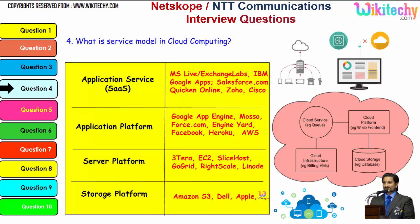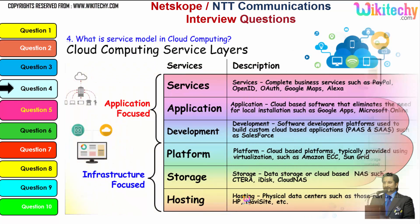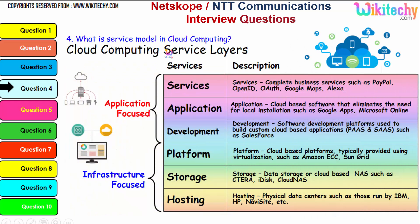Digging further into the service model: typical examples show your application service layer, your application platform layer, your server platform, and the storage platform given by Amazon S3, Dell, and Apple. The important service layers are: services, application development, platform, storage, and hosting. These are some of the typical examples under these particular services, and these are important services which will be asked in interviews about cloud computing.